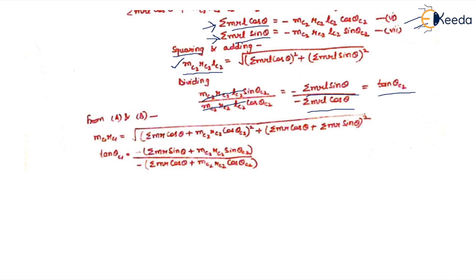Please remember that whenever you write these terms for sine and cosine, whatever the sign convention is — positive or negative — write it along with the whole term. The sign convention tells us in which quadrant the angle θc2 lies. With these two equations, we can calculate the values of mc2 and θc2.